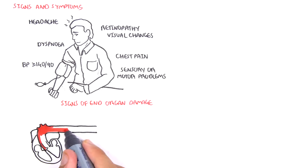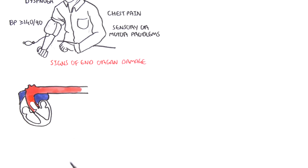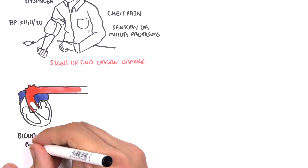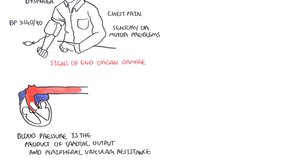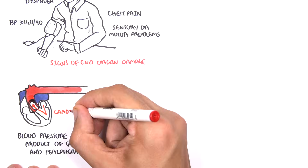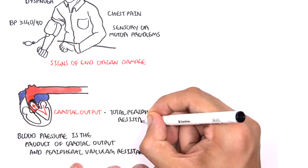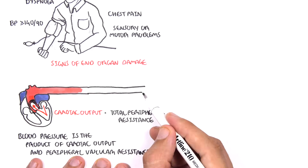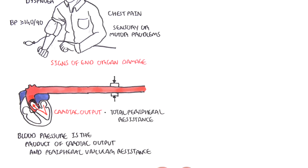So what is blood pressure? It is the product of cardiac output and the total peripheral vascular resistance. Here is a heart pumping blood out — this is the cardiac output — and together with the total peripheral resistance, makes up the average blood pressure.